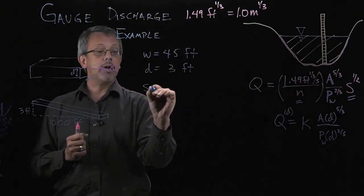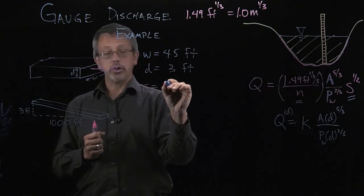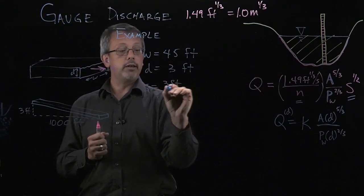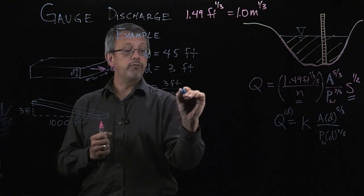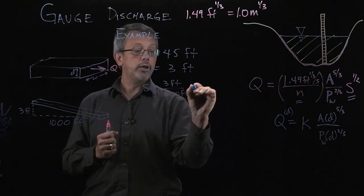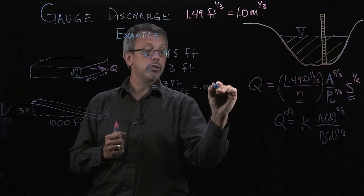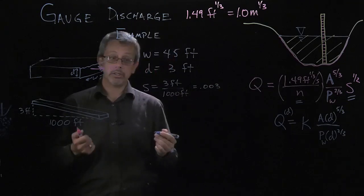So if we use that we can calculate S, which is our slope, which is that three feet divided by that thousand feet, which gives us a value of 0.003. And again unitless, the feet will cancel out.